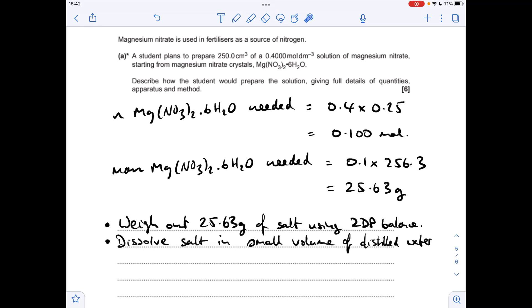Next thing we need to do is transfer the dissolved salt into a 250 cm cubed volumetric flask. Then to make sure we've got all of the dissolved salt out of the beaker, we'd rinse the beaker with distilled water and add the washings to the volumetric flask.